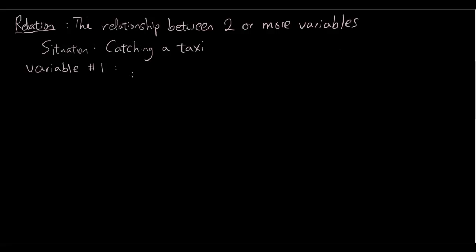the first thing is obviously how far you're going to travel in the taxi. So, the variable number one is distance traveled. And we're going to call this variable x.